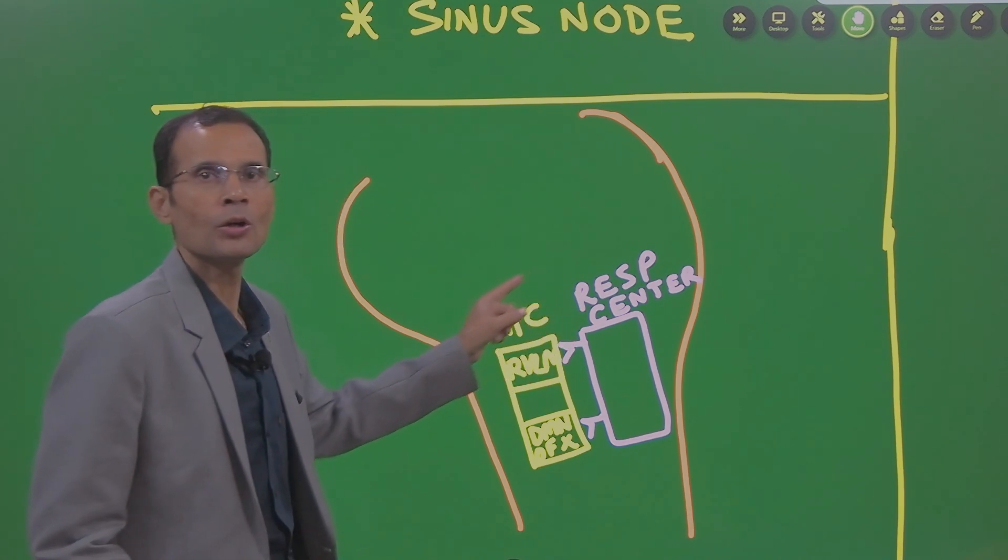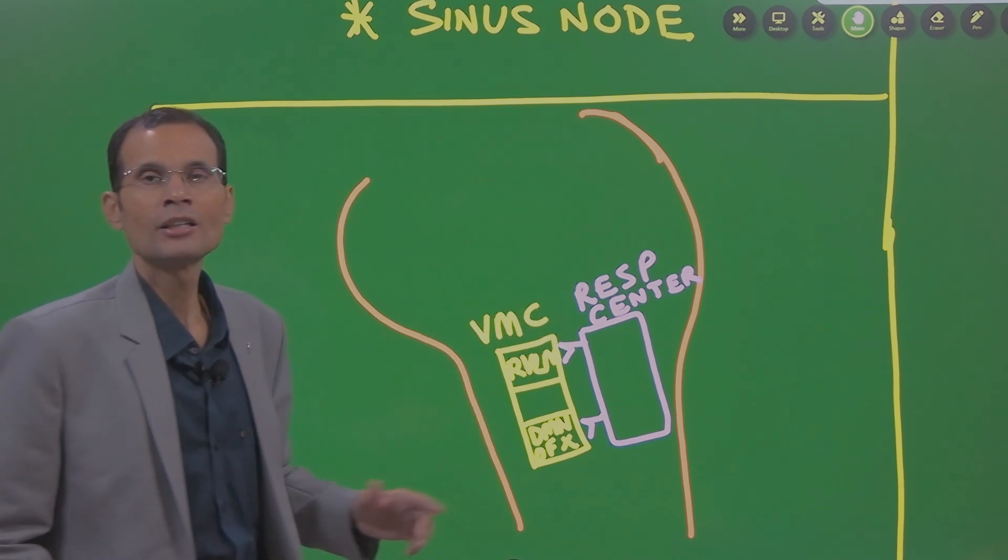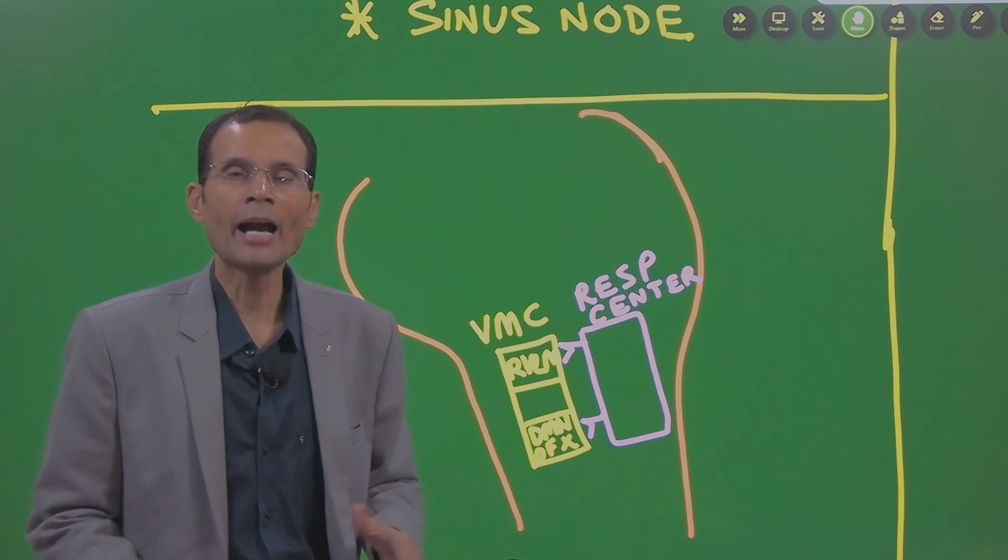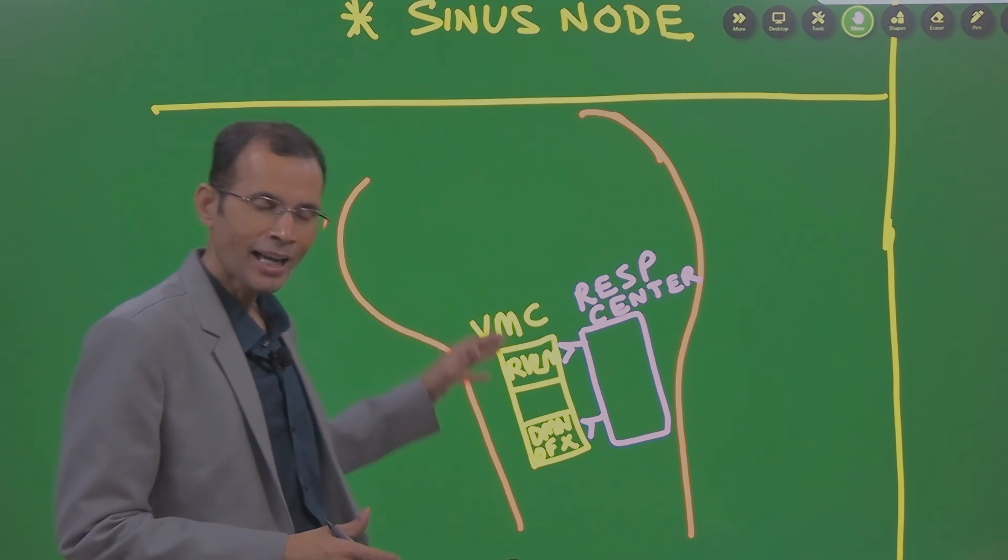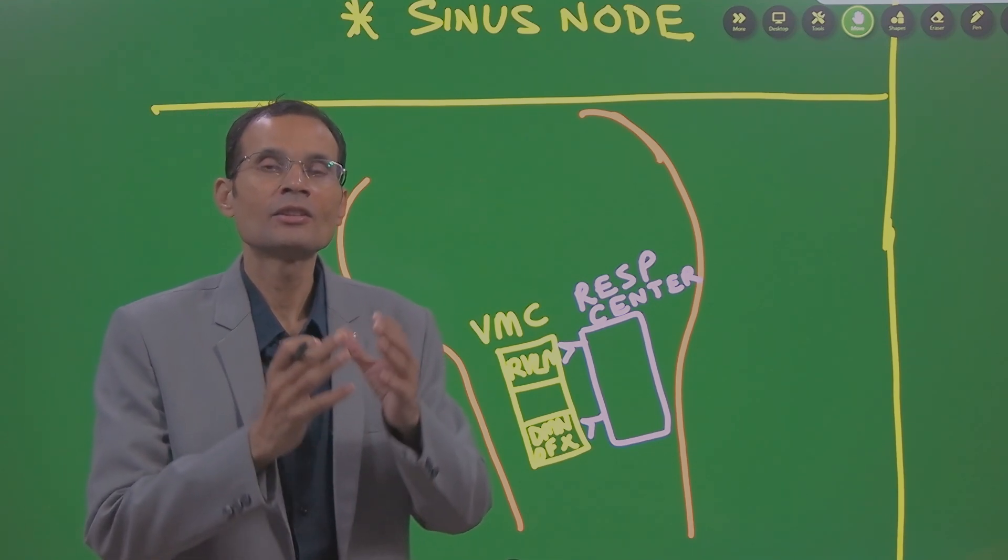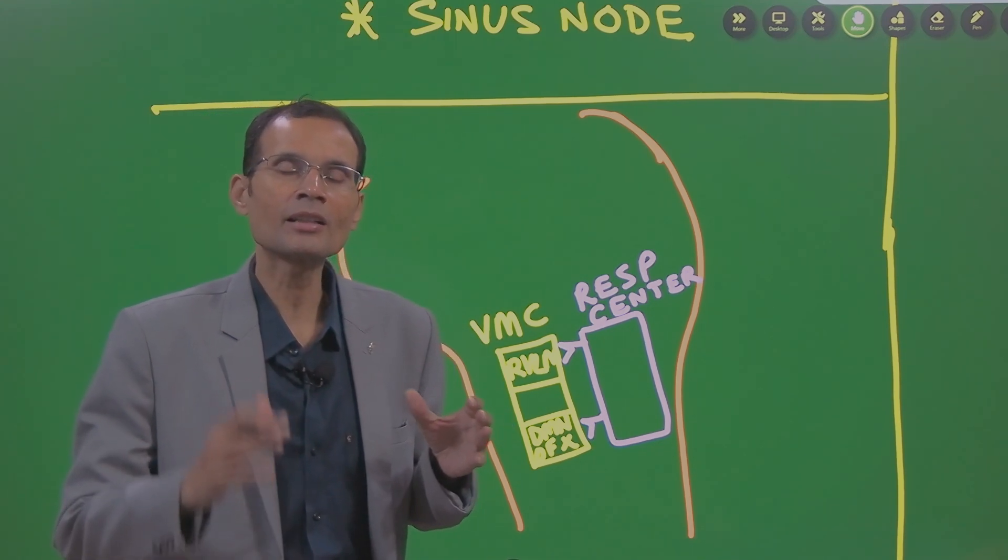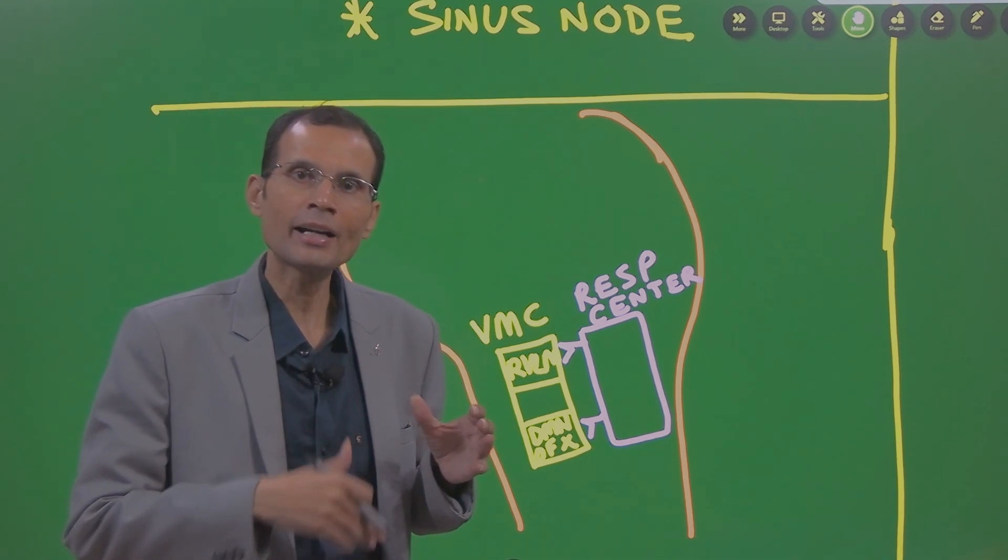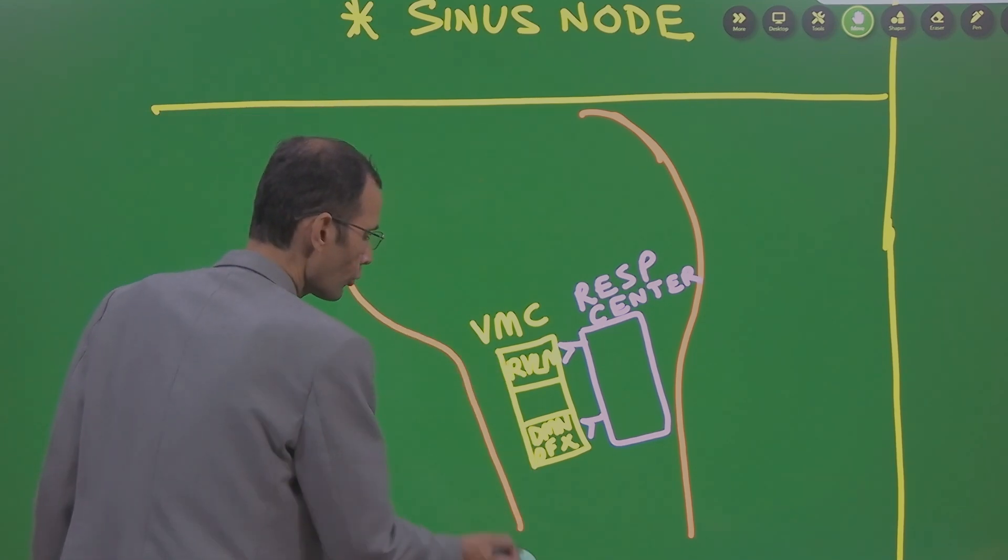There is spillover, spilling over of impulses to the vasomotor center. And you know, vasomotor center has the nuclei or areas which influence the sympathetic nerve cell bodies and the vagus outflow.